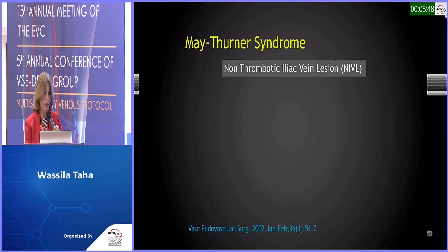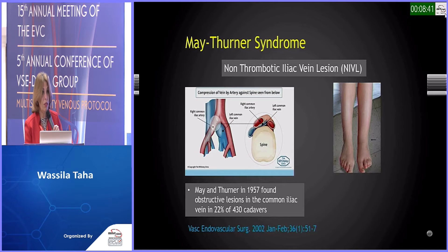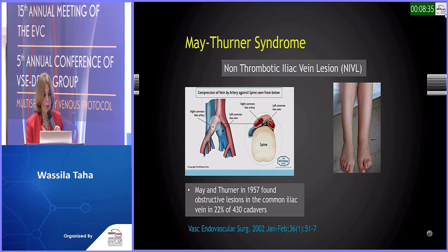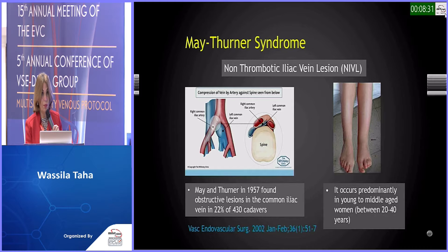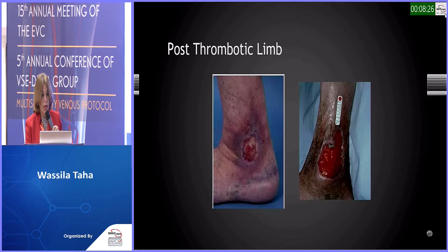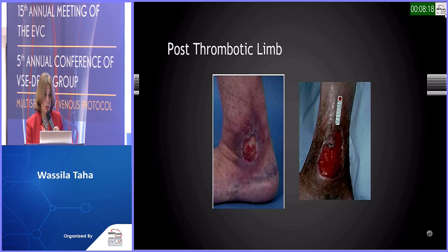We have two big contexts. The first is the non-thrombotic iliac vein lesion, most famously May-Turner syndrome, where the left common iliac vein is compressed by the right common iliac artery against the spine. This was first described by May and Turner in 1957, and it occurs predominantly in young women between 20 and 40 years old. The second scenario is occlusive venous disease — proximal occlusion — which is a devastating post-thrombotic condition.